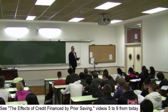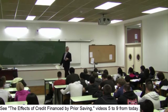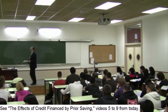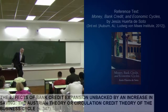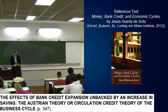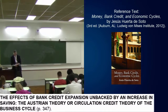Now we have analysed in terms of economic theory the effects of an increase in saving. It is time for us to take the next step. We will turn to page 347 and what is perhaps the most important section in the book: the effects of bank credit expansion unbacked by an increase in saving — the Austrian theory, or circulation credit theory, of the business cycle.